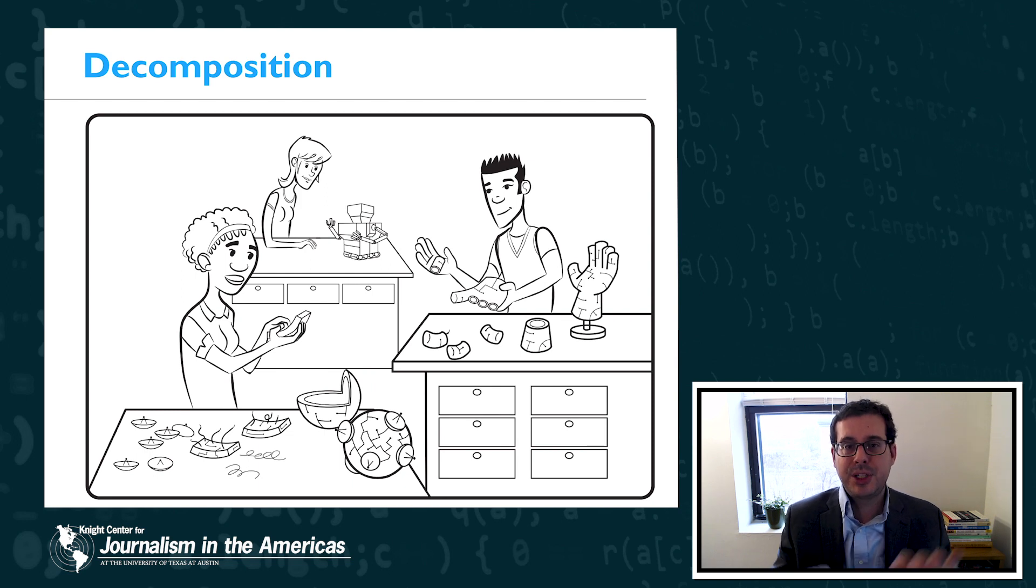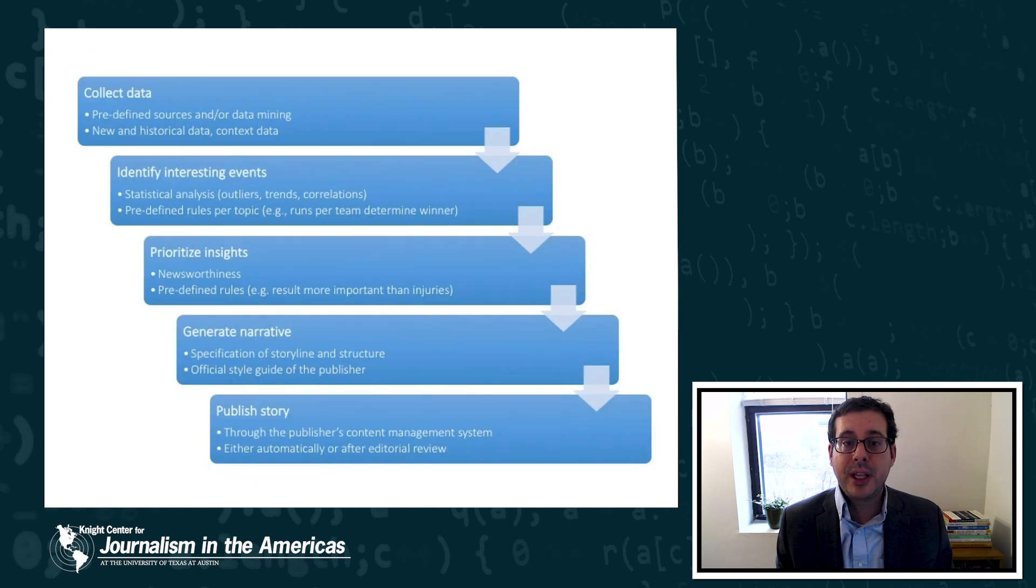So decomposition is about breaking things down, figuring out which pieces are better for human versus computer, and then building back up in order to solve the bigger problem again. So let's look at an example of this. So consider the workflow for writing an article of data journalism, for instance. Maybe we can decompose that workflow into some sub-steps. So in this slide, I'm showing you five sub-steps.